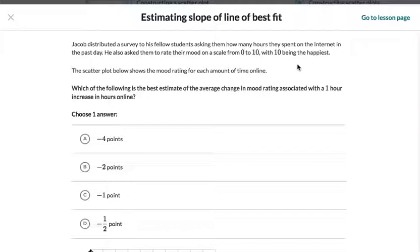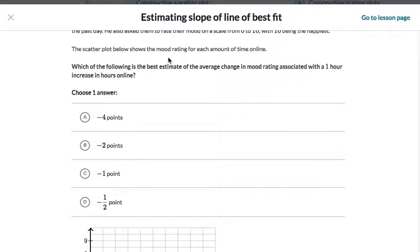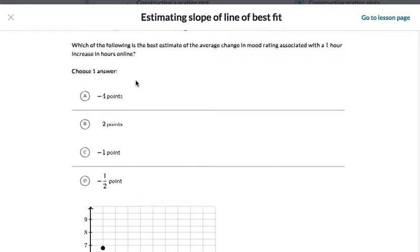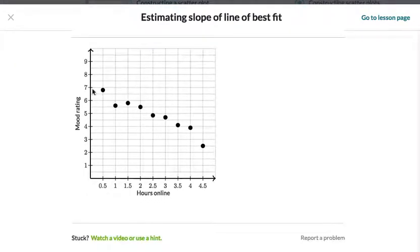So he's collecting bivariate data here and he's asking what's the slope, the average change in mood rating associated with a one hour increase in hours online. So the more time you spend online, what's going to happen to your mood as a result? As we can see here, the mood rating goes down the longer you spend and that makes a lot of sense. All the research shows that.